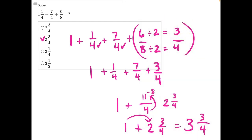If we were to first add together our two fractions that have a common denominator, we could add one plus one fourth plus seven fourths, we would get one plus eight fourths. Four can go evenly into eight two times. So eight fourths is the same thing as two wholes. This becomes one plus two, which is three.